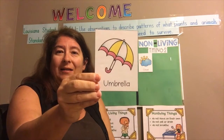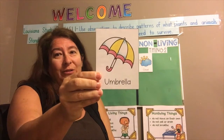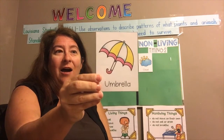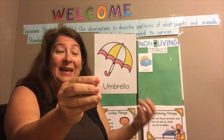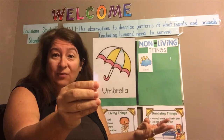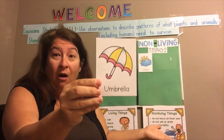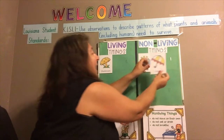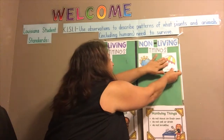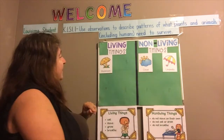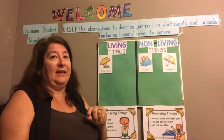Next, an umbrella. I know that I hold an umbrella, and umbrellas don't eat. They don't breathe. They can't drink anything because they just push the water off of me. So an umbrella must be a non-living thing. We have two non-living things and one living thing.